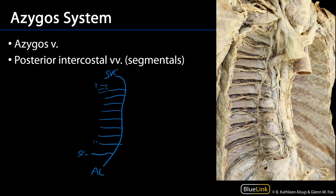On the left side, we're going to have the accessory hemi-azygos vein as well as the hemi-azygos vein draining the left intercostal spaces.